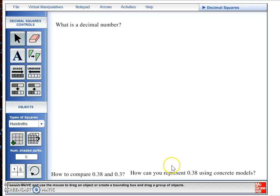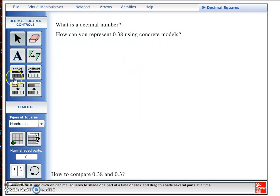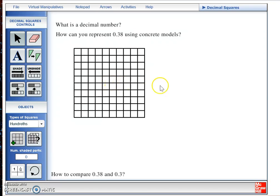Now, our second question was how can you represent 38 hundredths using concrete models. 38 hundredths can be represented by covering 38 of the equally portioned pieces in our hundredths square. The 3 in our 38 stands for 30 equal portions of our hundredths square. The 8 represents 8 small portions, also shaded in.